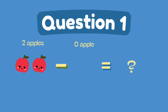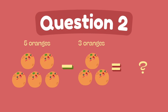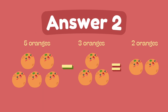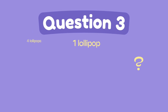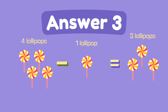What is 2 minus 0? The answer is 2. What is 5 minus 3? The answer is 2. What is 4 minus 1? The answer is 3.